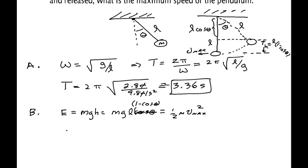So therefore g times L times one minus cosine theta is equal to one half v max squared. Or v max is the square root of 2gL times one minus cosine theta.